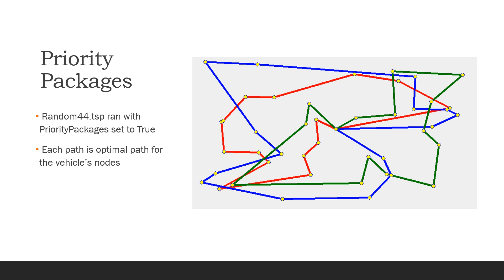Here's an example of Random 44.tsp run with priority packages set to true. Each path here is the optimal path for the vehicle's nodes, though they do overlap a lot because this time instead of focusing on their location, we focused on their priority or the time that the orders are made. This one would be more applicable to something like Amazon Prime deliveries. Say the green is a truck leaving at 9 a.m., so it takes all these deliveries that are already at the facility and ready to go. Then blue is a truck departing at noon, and finally red is a truck leaving at three. They may overlap a lot, but it's because they're out at different times and the packages are ready or required at different times.